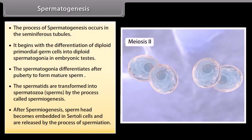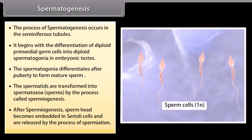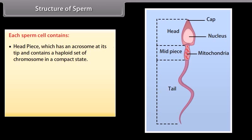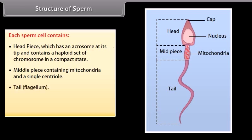After spermiogenesis, sperm heads become embedded in Sertoli cells and are released by the process of spermiation. Each sperm cell contains a headpiece which has an acrosome at its tip and contains a haploid set of chromosomes in a compact state, a middle piece containing mitochondria and a single centriole, and a tail or flagellum. An adult male produces about 100 million sperms each day.